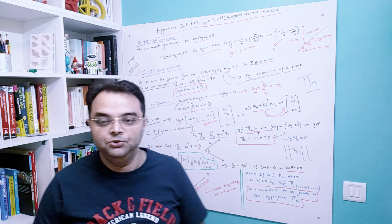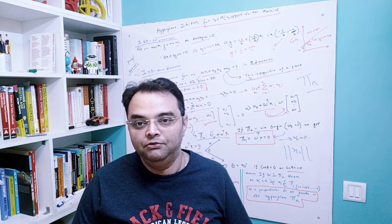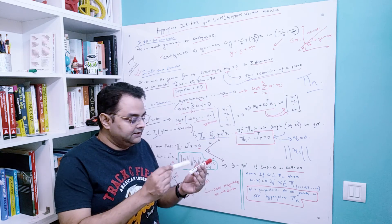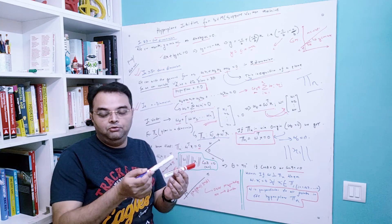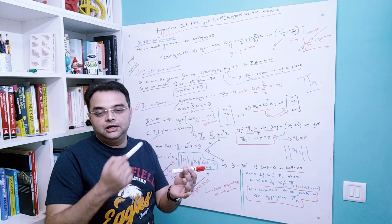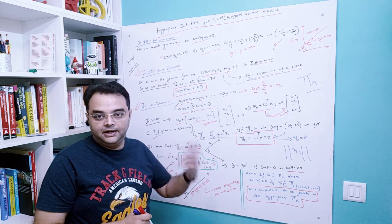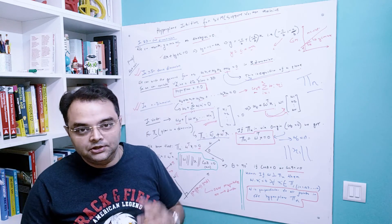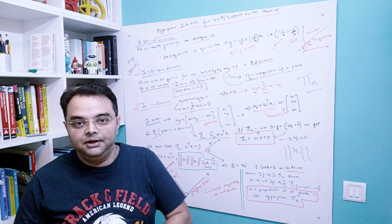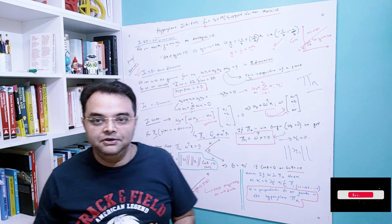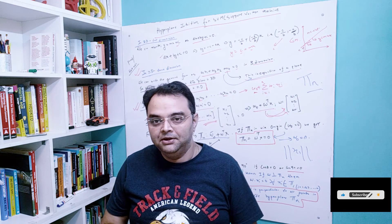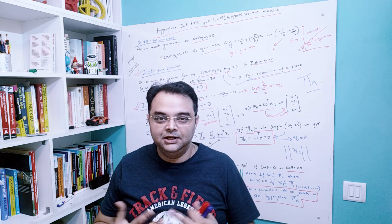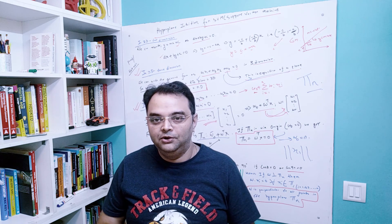That concludes the first part. In the second part of the video we'll use this notation as a separator, saying that points lying above the plane are positive and points lying below it are negative. In the third part we'll look at the kernel trick as well — so this is a three-part video. Thank you so much; do like, share, and subscribe, and check the description section for announcements and updates.